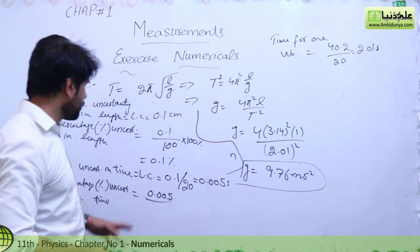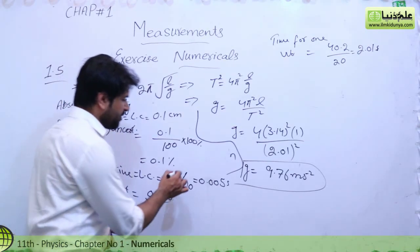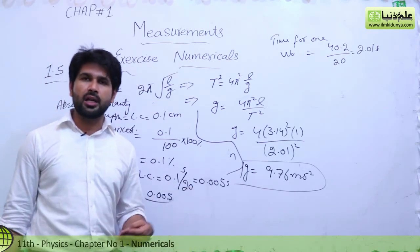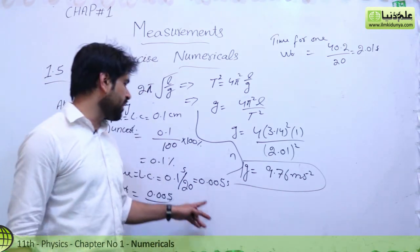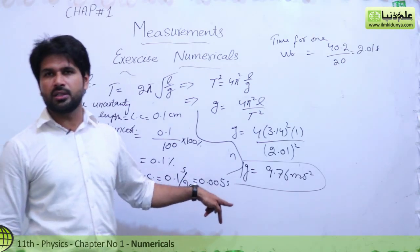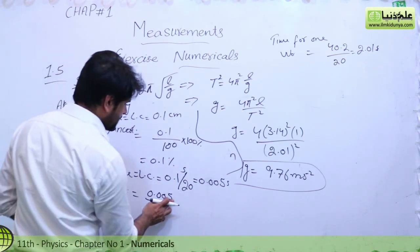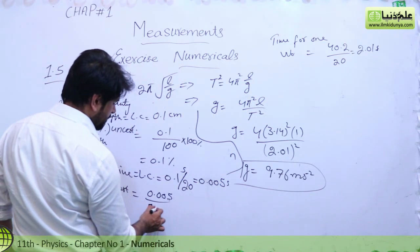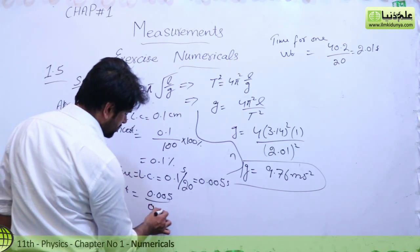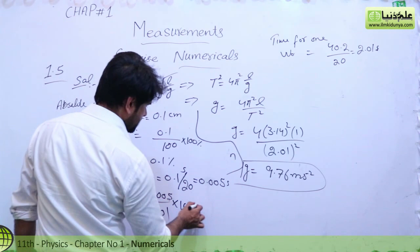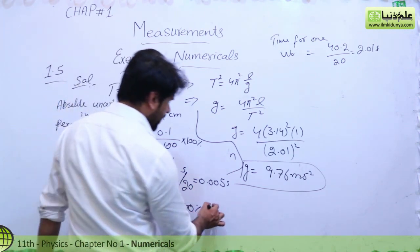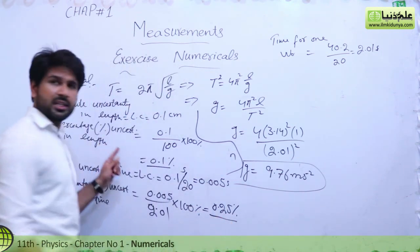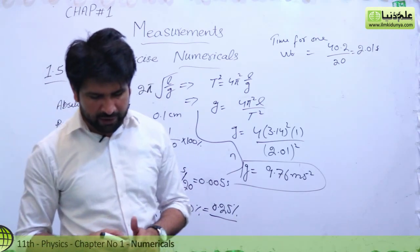For percentage uncertainty, we now use 0.005, not 0.1. The 0.1 second was given for 1 vibration, and 0.1/20 = 0.005. So percentage uncertainty in time = (0.005 / 2.01) × 100 = 0.25%, because 2.01 seconds was the time for 1 vibration. So we get 0.25% for time and 0.1% for length.